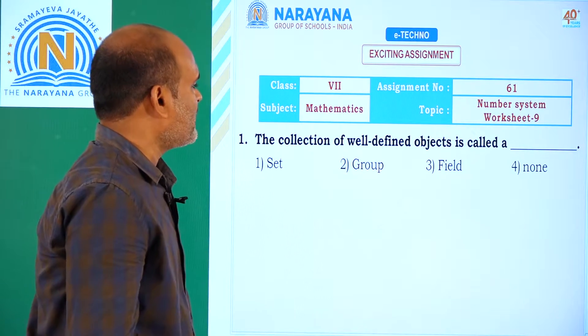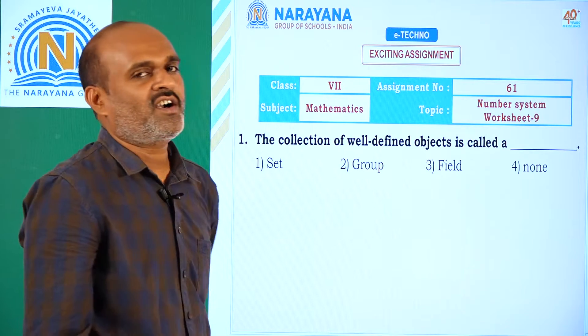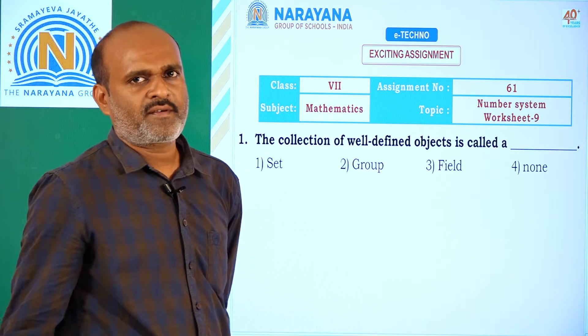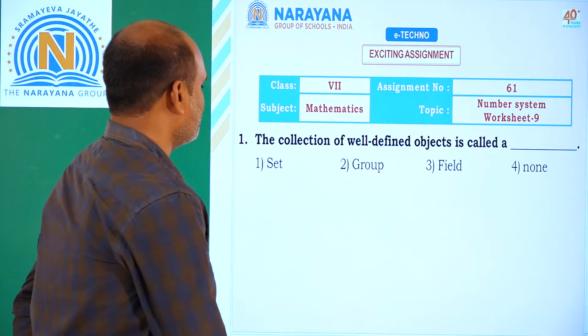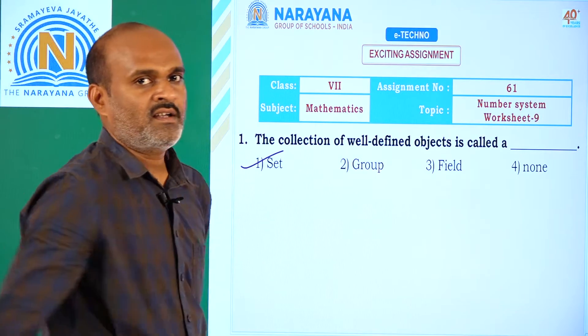Here is the first question. The collection of well-defined objects is called a set by definition. So option 1 is the correct answer.